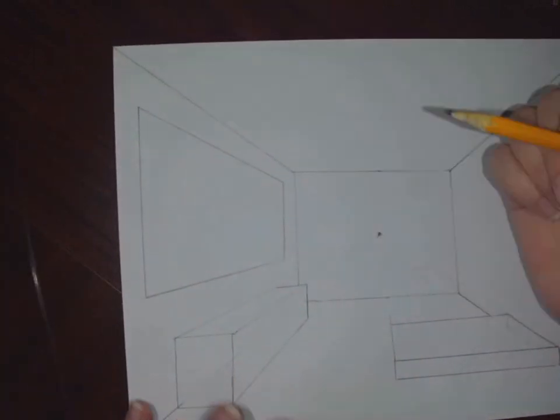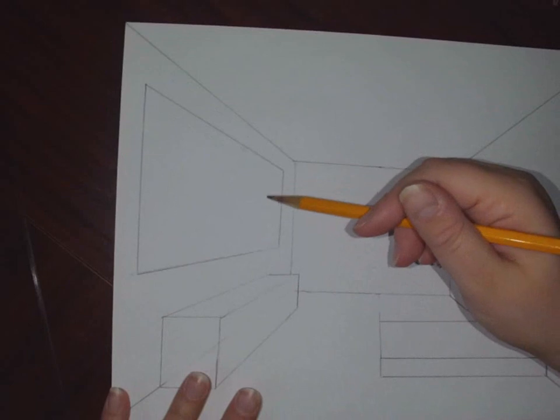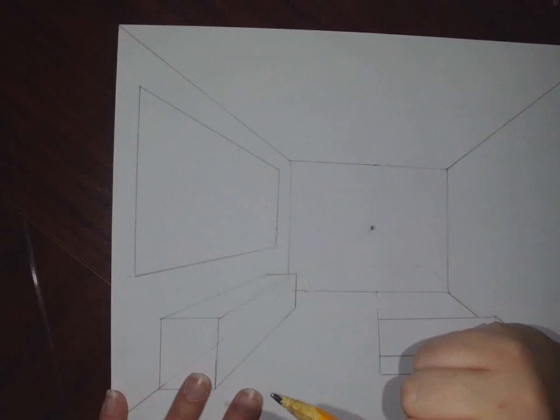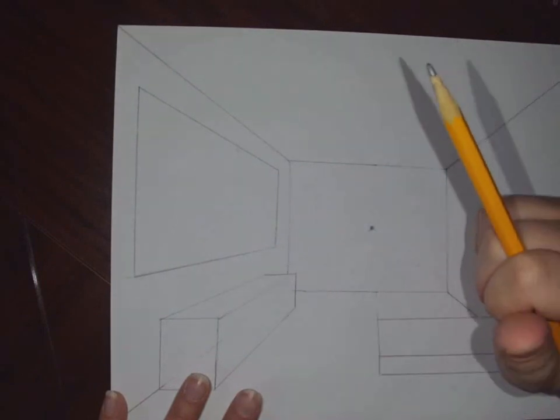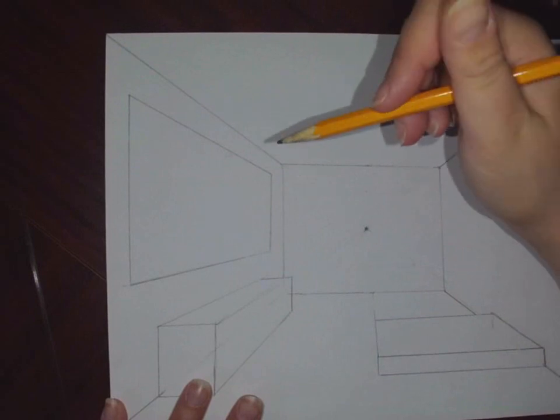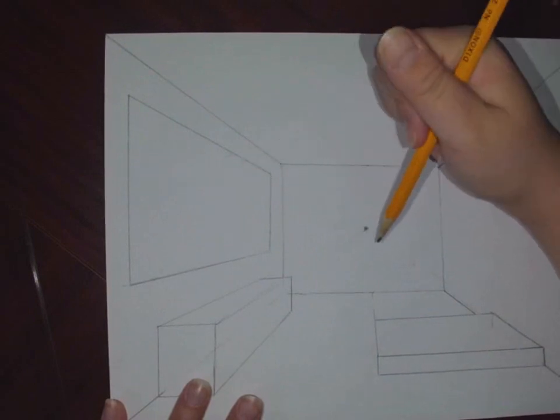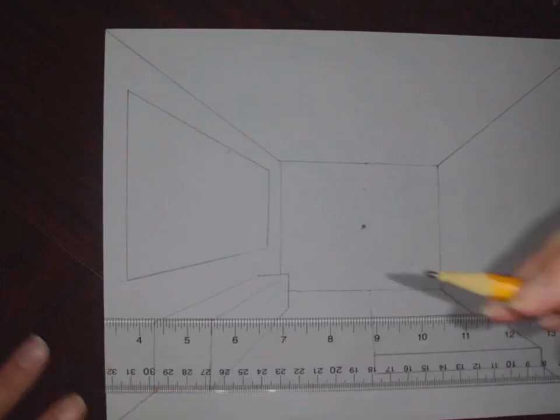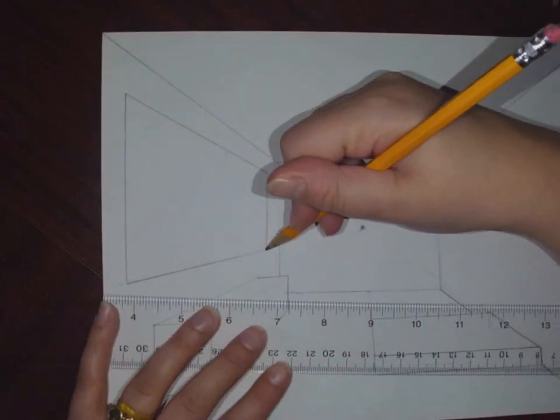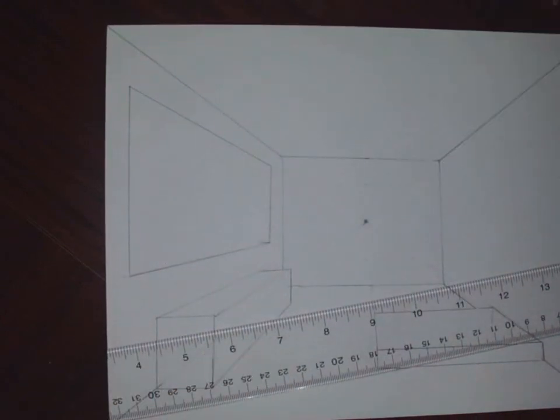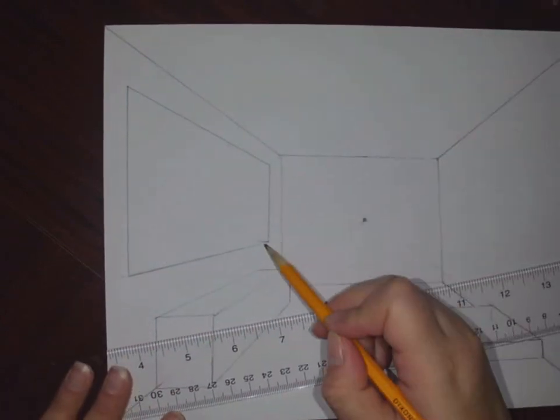Now, there's a couple things that this could end up being. If you wanted to put a TV in there, you could do that. If you wanted to put artwork in there, you could do that. I need to make this look like a window. Otherwise, it's not really going to work. So, what I'm going to do is I'm going to make sure that this has some depth. So, I'm going to do that by using a transverse line. I'm going to go right at the corner here. And I'm going to bring it in.